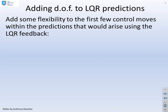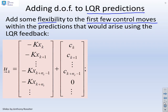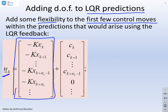How do we add degrees of freedom to our LQR predictions? We want to add some flexibility to just the first few control moves within these predictions. The optimum predictions for U future were given by minus K x_k at sample k, minus K x_{k+1} at sample k plus one and so on. What we're going to do is add a perturbation term: c_k at time k, c_{k+1} at time k plus one. We're going to do n_c of these. That's our immediate transients. Beyond that, we're going to assume there's no perturbations.